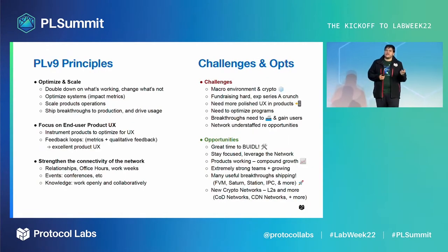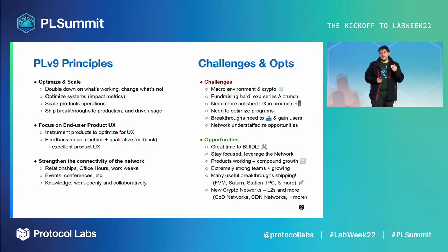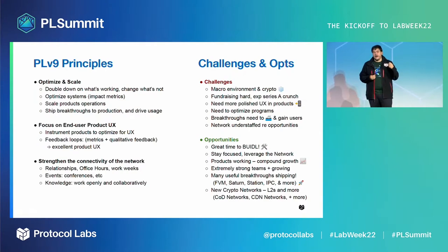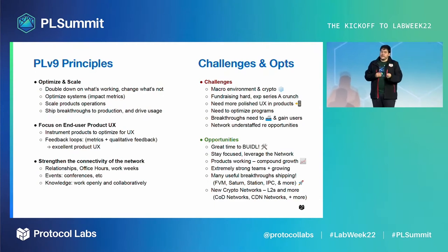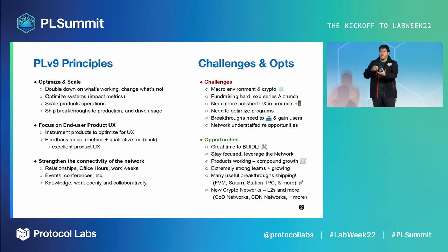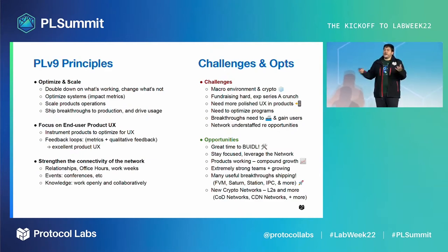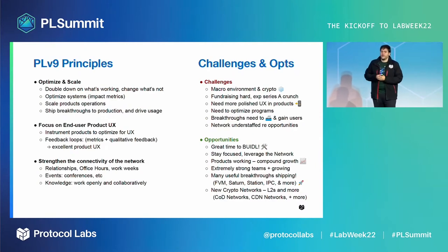I want to give some principles to the whole network for next year. One is optimize and scale — double down on what's working, change what's not. We have a lot of really valuable systems and programs, so let's grow them. Think about how to optimize them with impact metrics and feedback. I see a lot of groups doing extremely valuable work but not really measuring what matters or getting feedback from users — and if you're not getting feedback from your users, you don't know how to orient the product.